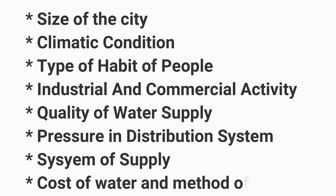Next is the type of habit of people. In a city or a town, what habits do people have? First, if people have awareness, they will save water — savings means using water more carefully. If you have awareness, your per capita demand will be lower. On a daily basis, you will wash your clothes, clean your house. Also, if you have a garden in a town, you need to water it. So these habits affect per capita demand.